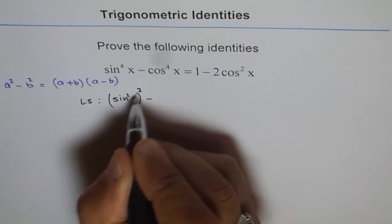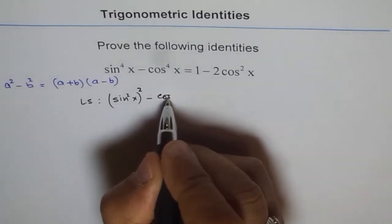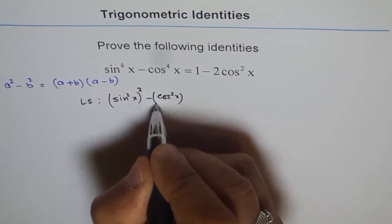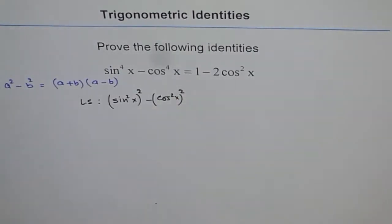Do you see that? It becomes sin^4x and (cos^2x)^2. So that is my left side.